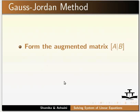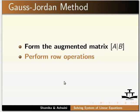Next we shall study the Gauss-Jordan method. In Gauss-Jordan method, the first step is to form the augmented matrix. To do this, place the coefficient matrix A and the right-hand side matrix B together in one matrix. Then we perform row operations to convert matrix A to diagonal form.